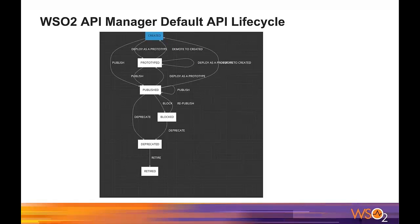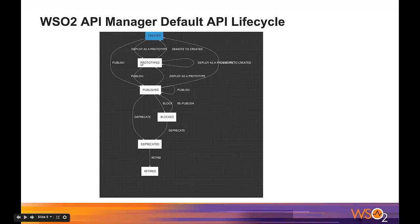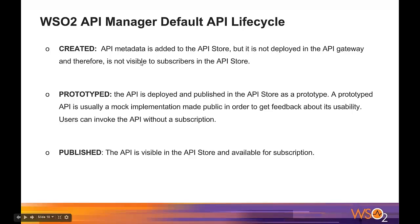This is the visual view of the WSO2 API Manager default lifecycle. It has six lifecycle stages: created, prototyped, published, blocked, deprecated, and retired. From each stage, there are configured state transitions to transfer from one stage to another.